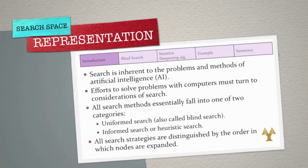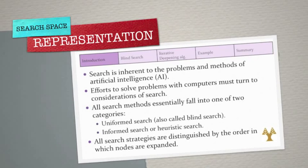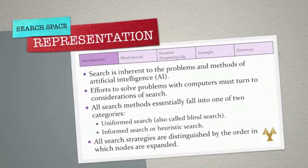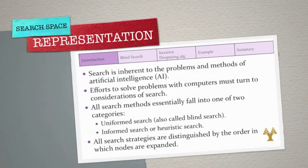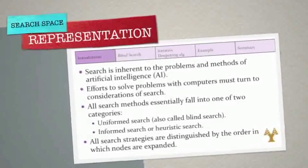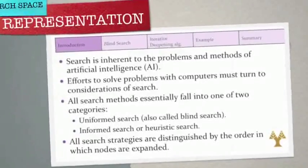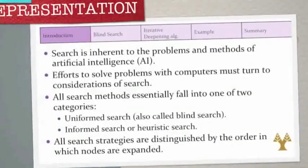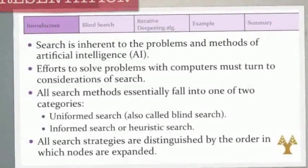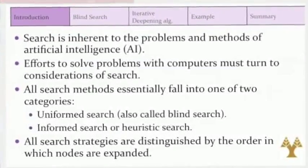Strategies that know whether one non-goal state is more promising than another are informed search or heuristic search strategies. All search strategies are distinguished by the order in which nodes are expanded.